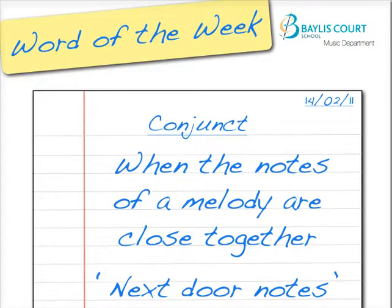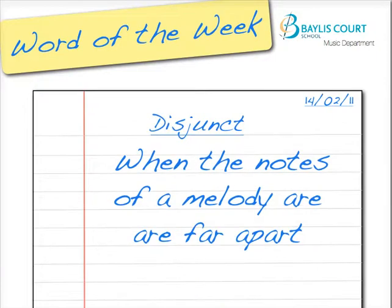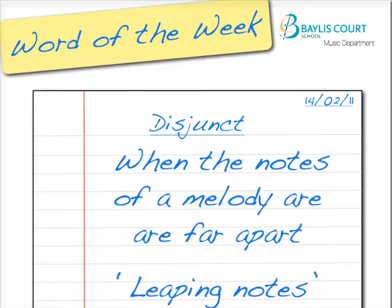Whereas a disjunct melody is when the notes are far apart from each other — we could say the notes are leaping through great distances. The two notes wouldn't be near each other on a keyboard, and they wouldn't be near each other on a guitar without having to change string. So they're called disjunct melodies when there's a large leap.